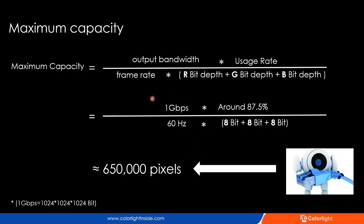So checking the formula: the maximum capacity for one output port is transmission bandwidth multiplied by usage rate, then divided by the frame rate and color depth. Normally, the frame rate is calculated at 60 Hz. With an 8-bit input source, each pixel is composed of three colors — red, green, and blue — so the data of one pixel is 24-bit. Finally, we get the result: around 650,000 pixels. That's how this number is derived.